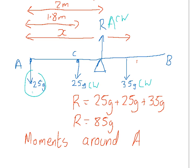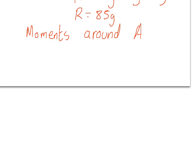Remember, the moments clockwise equal the moments anticlockwise. So let's write out our equation. The moments clockwise was 25g times 1.8 plus 35g times our distance x, and that's equal to 85g times 2.